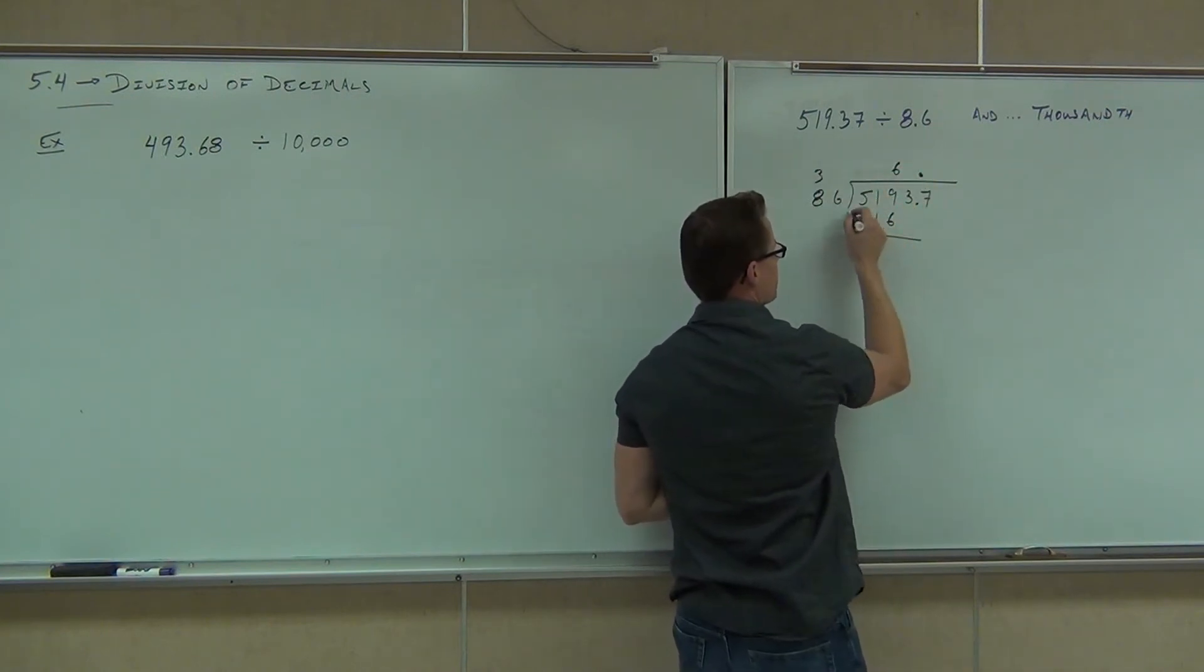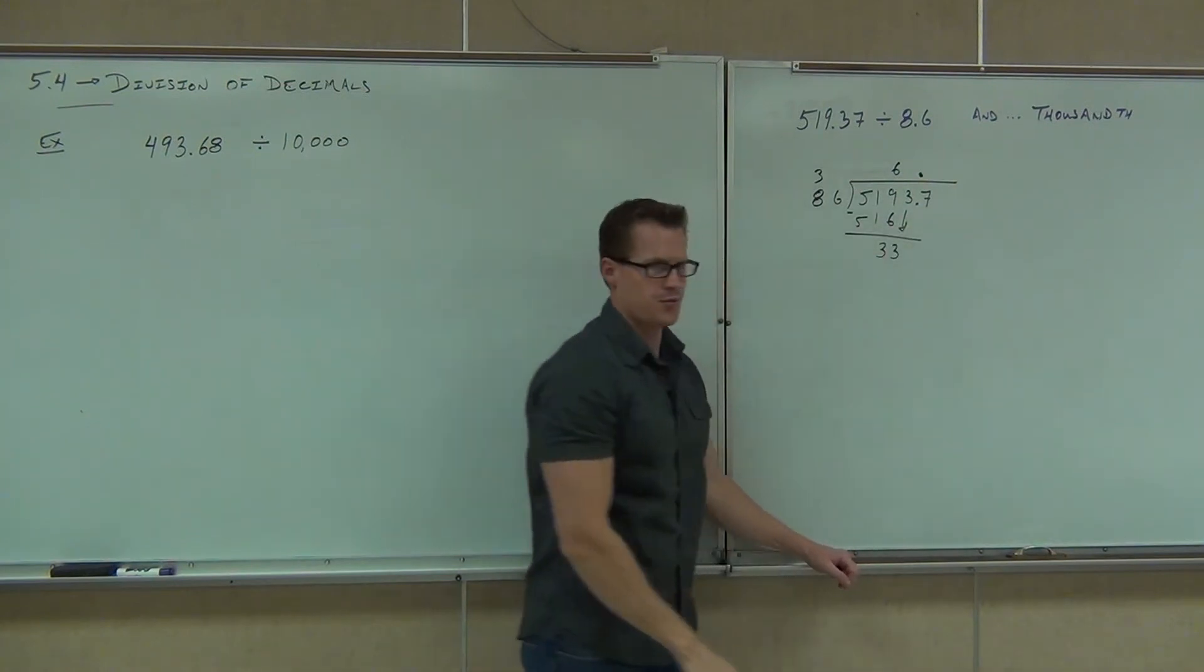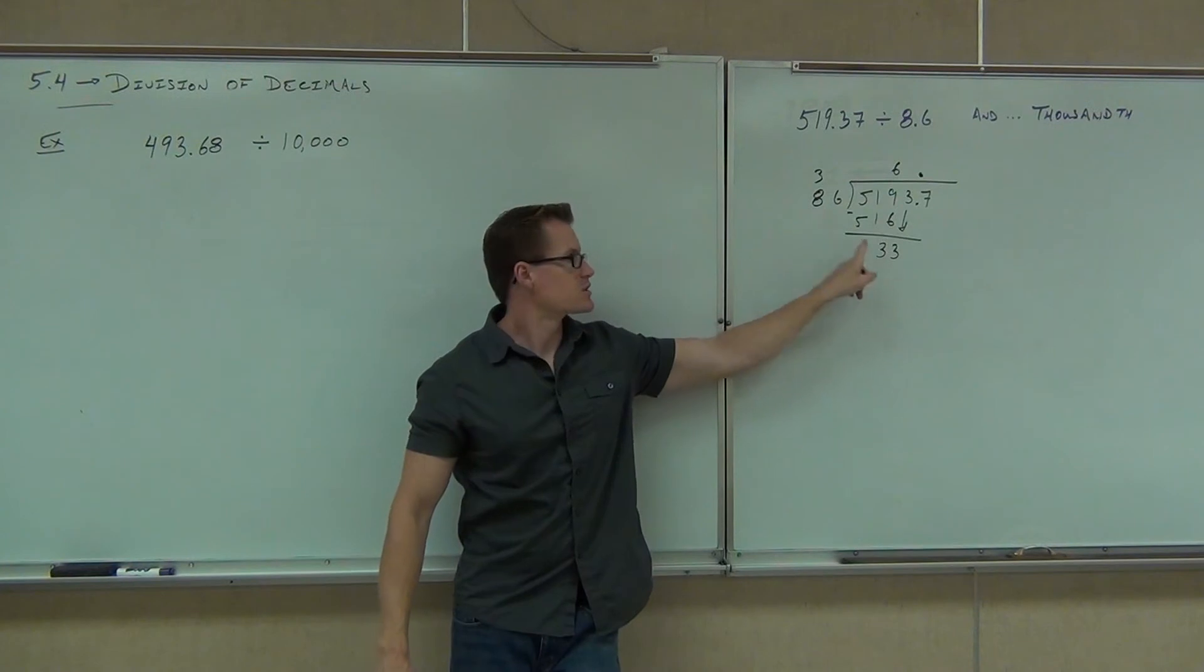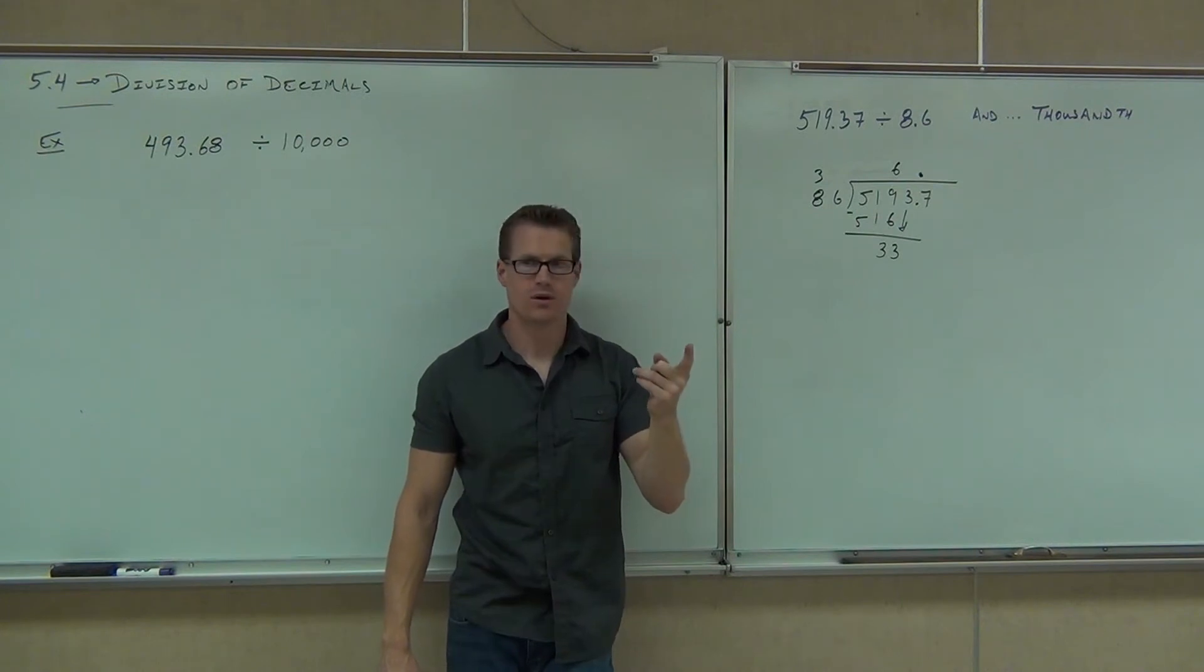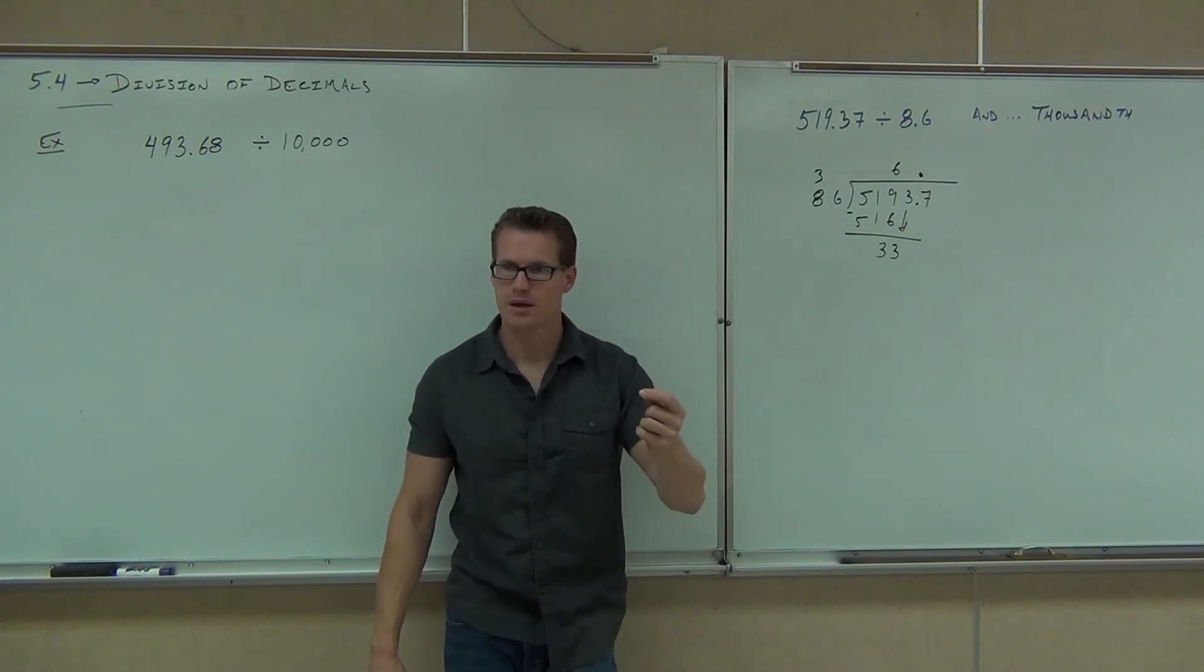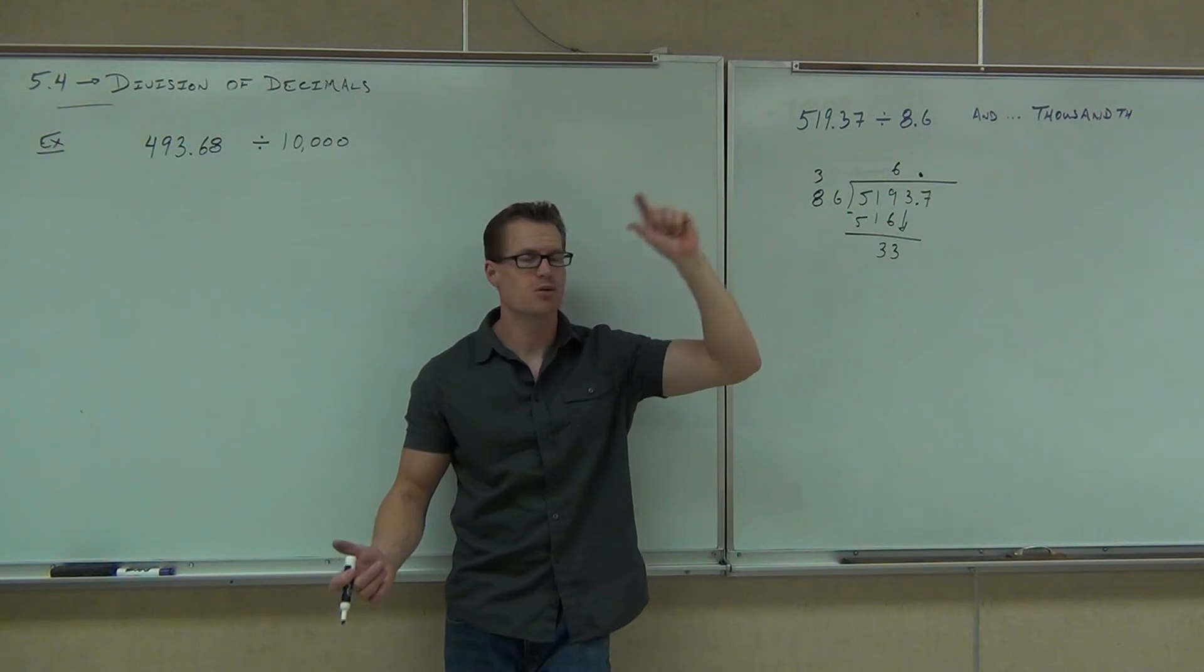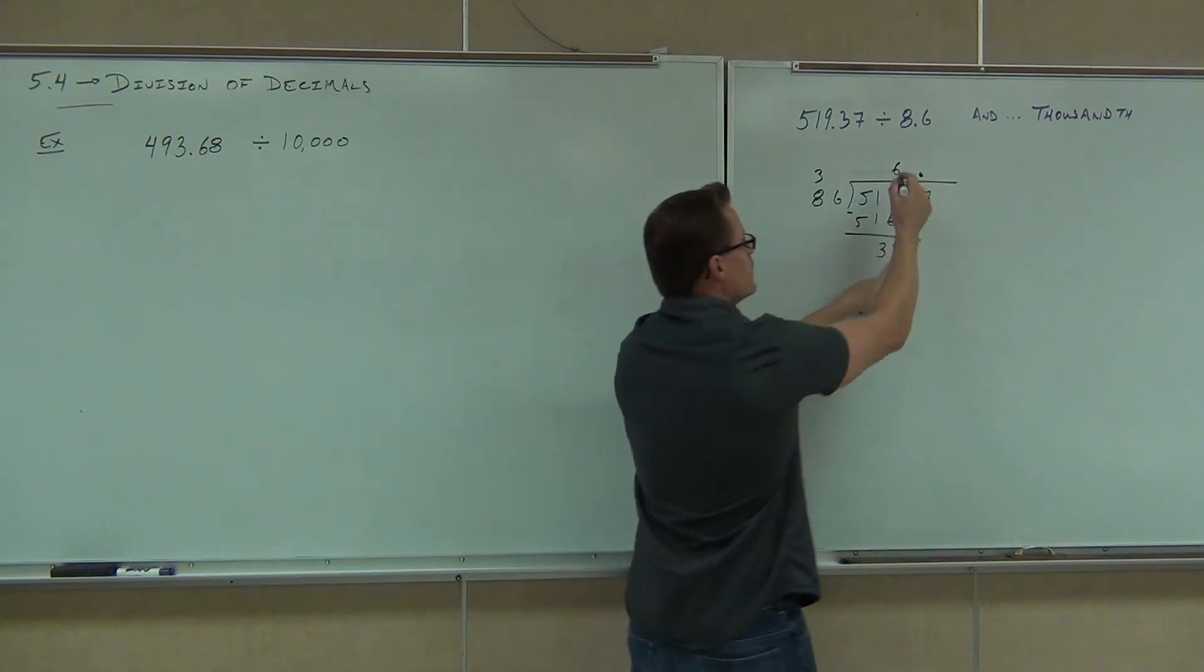So, that's 51. We subtract, we get 33. But we bring down the 3. I want your eyes on the board here real quick. Does 86 go into 3? No. Does it go into 33? No. Okay. What would you do now? Put a 0 on top. So, you would bring down a number, but not before putting a 0 on the top of your problem. If you bring down a number, you have to put a number up top. Even if it's 0, you have to put something up there. To bring down another one, you have to put something up there.